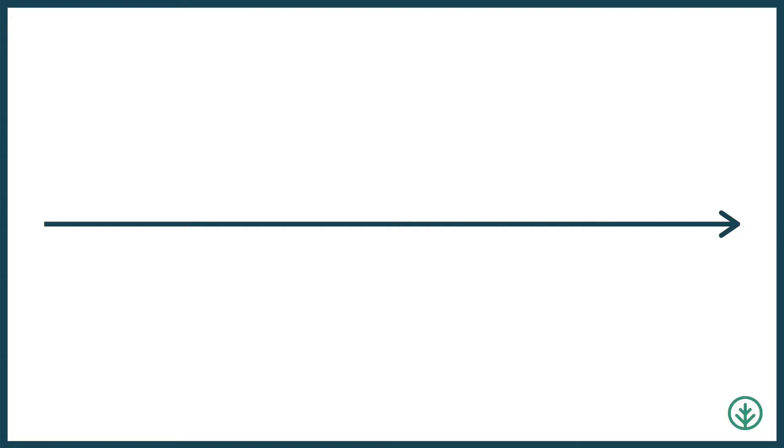But ultimately, for the most part, people don't do this because it's not built into the foundations of our economic system. At Impact Zero, we like to explain the linear economy in a series of five steps. The first one is resource extraction.